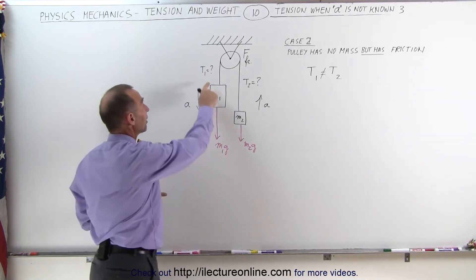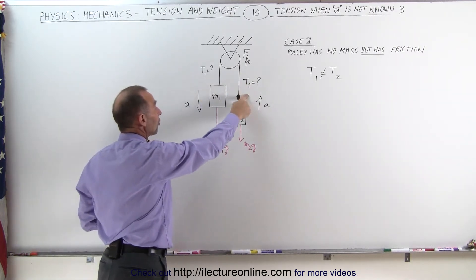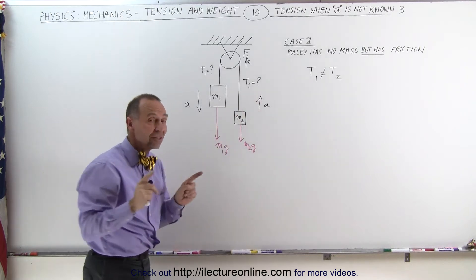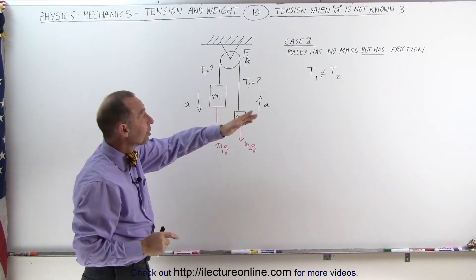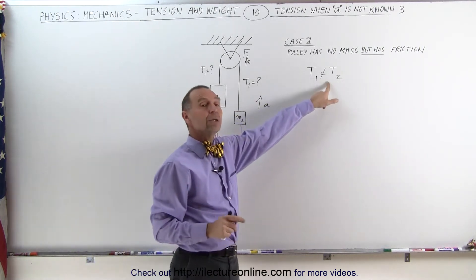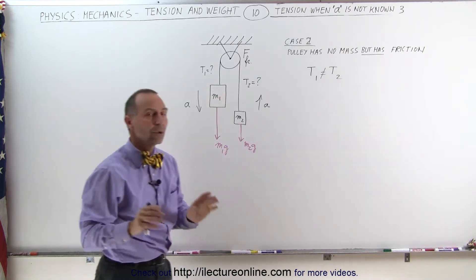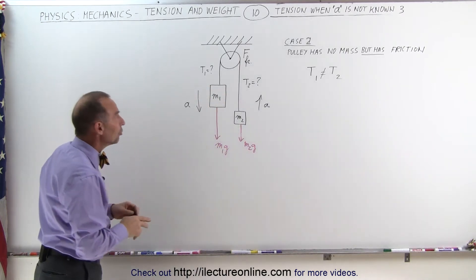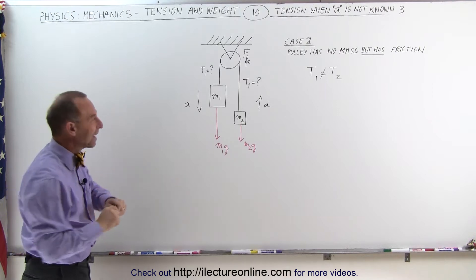We're still trying to find the tension on the left side and the tension on the right side, but in this case, we know that since there's friction on the pulley, tension one cannot equal tension two. Regardless, to find tension two and tension one, you can still do it the exact same way.